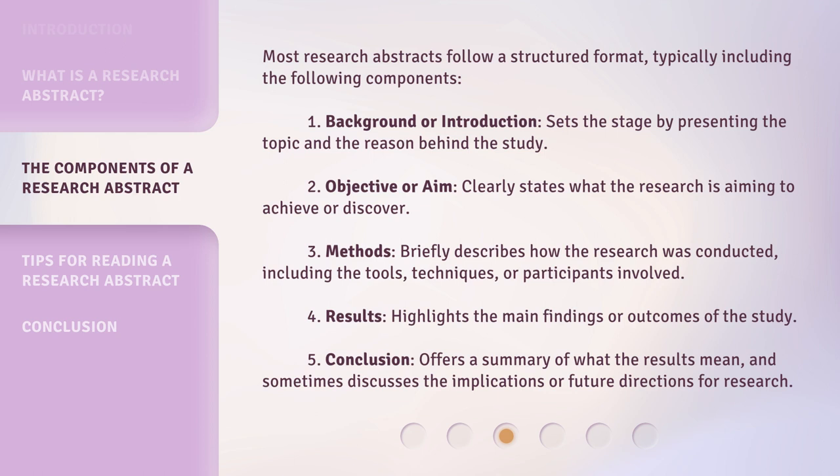Most research abstracts follow a structured format, typically including the following components. First, Background or Introduction: sets the stage by presenting the topic and the reason behind the study. Second, Objective or Aim: clearly states what the research is aiming to achieve or discover. Third, Methods: briefly describes how the research was conducted, including the tools, techniques, or participants involved. Fourth, Results: highlights the main findings or outcomes of the study. Fifth, Conclusion: offers a summary of what the results mean, and sometimes discusses the implications or future directions for research.